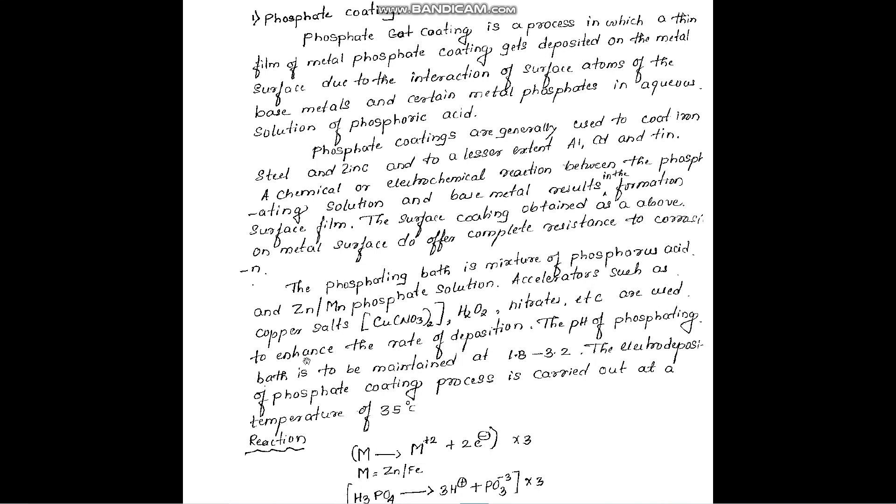The pH of phosphoric acid is maintained at 1.8 to 3.2, which means we are going to maintain an acidic medium.